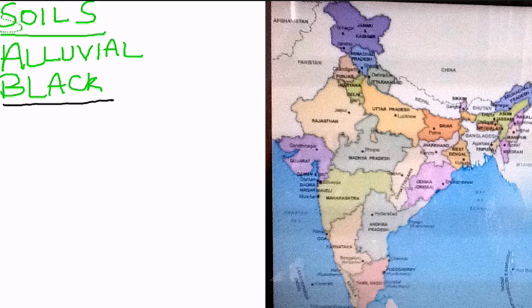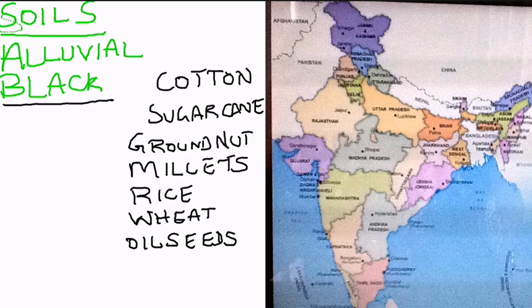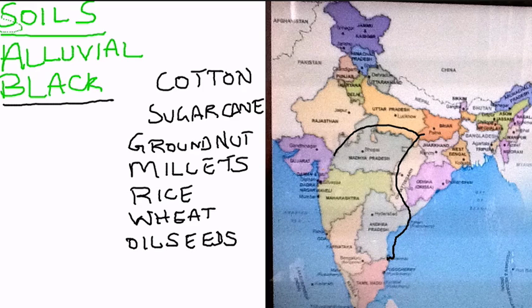calcium, magnesium, and carbonates, but poor in phosphorus, nitrogen, and organic matter. The soil covers about 5.4 lakh square kilometers. The crops grown are primarily cotton, followed by sugarcane, groundnut, millets, rice, wheat, and oilseeds. The areas where this soil is found include the Deccan region — that is Maharashtra — parts of Andhra Pradesh, northern Karnataka, parts of Tamil Nadu, and Rajasthan.